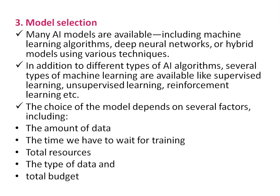Step three is model selection. Many AI models are available, including machine learning algorithms, deep neural networks, or hybrid models using various techniques. Several types of machine learning are available, like supervised learning, unsupervised learning, and reinforcement learning. The choice of model depends on several factors including the amount of data, the time available for training, total resources, the type of data, and the total budget.